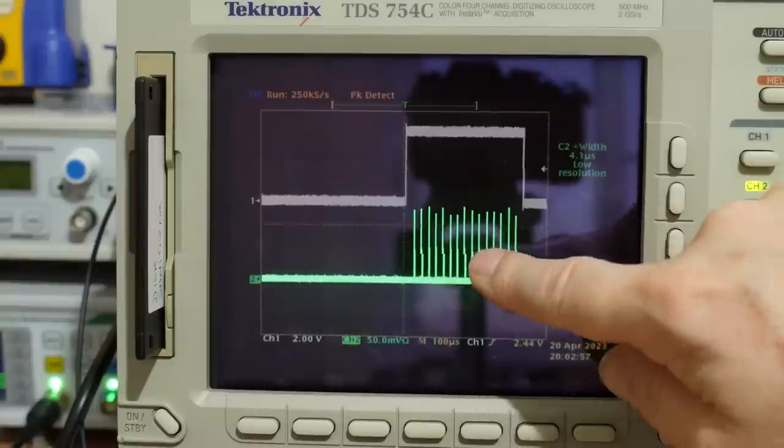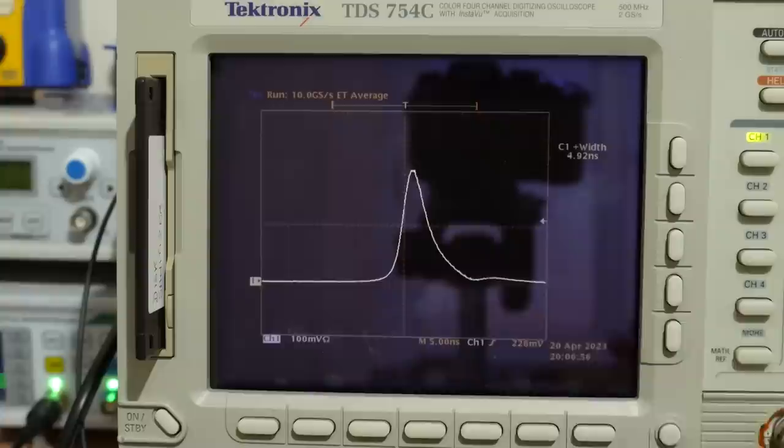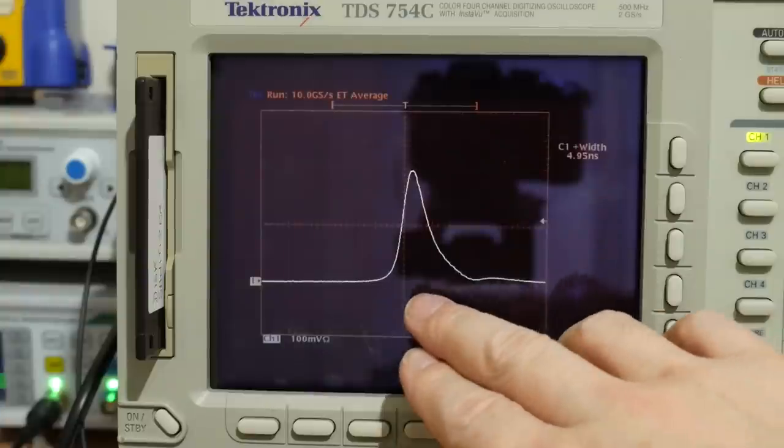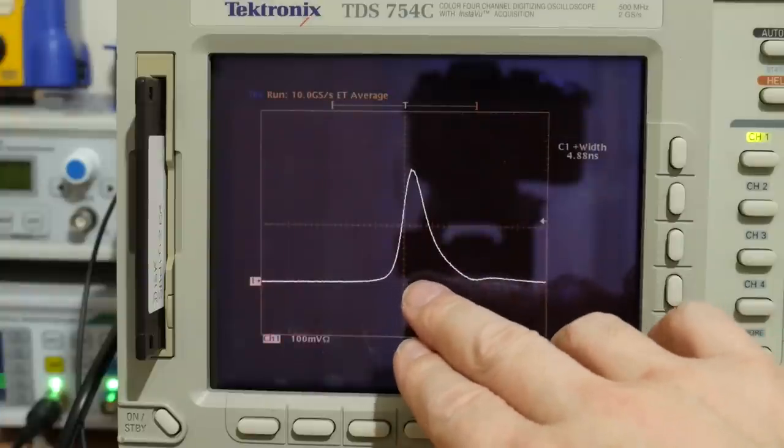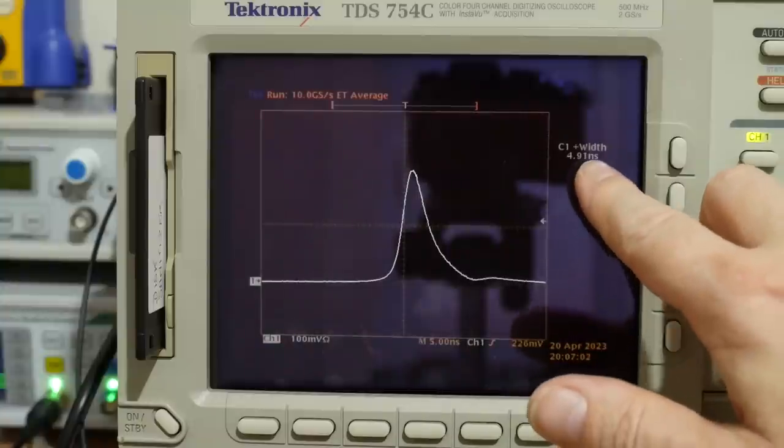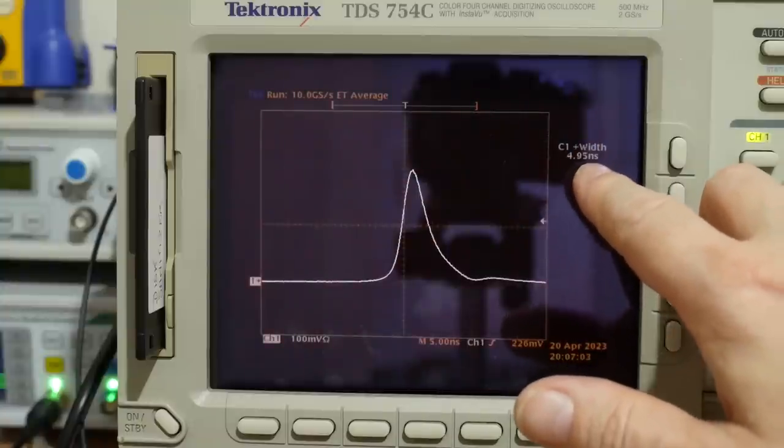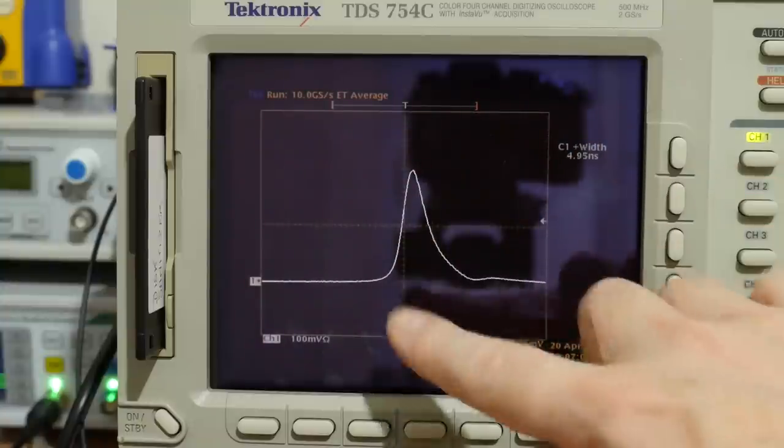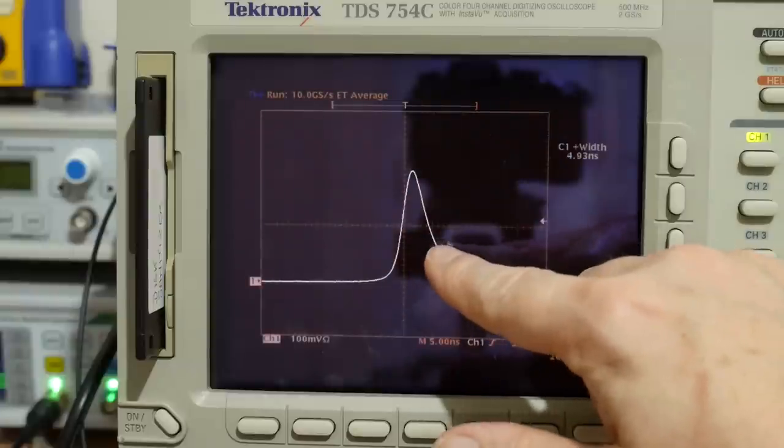I'm zoomed in on the optical signal itself here so we can take a close look at it and perform a measurement. The pulse width, full width half maximum, seems to be around about 5 nanoseconds. So there we have it, we've got an actual measurement of the pulse width of the laser module, excellent.